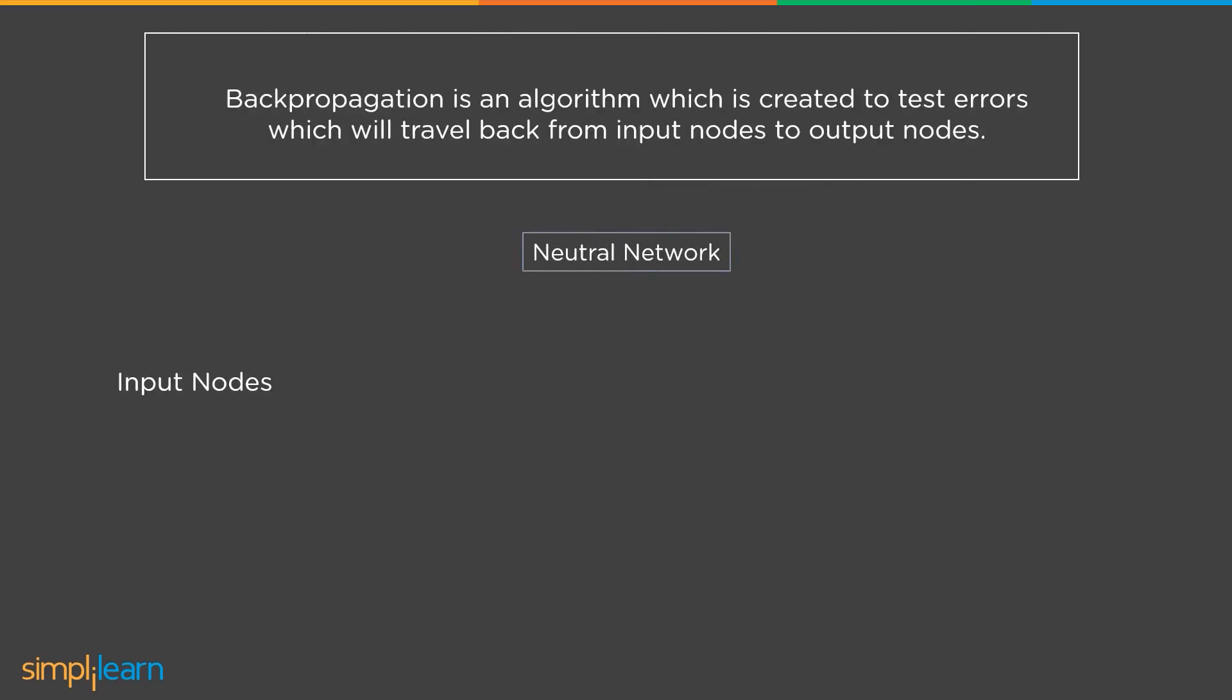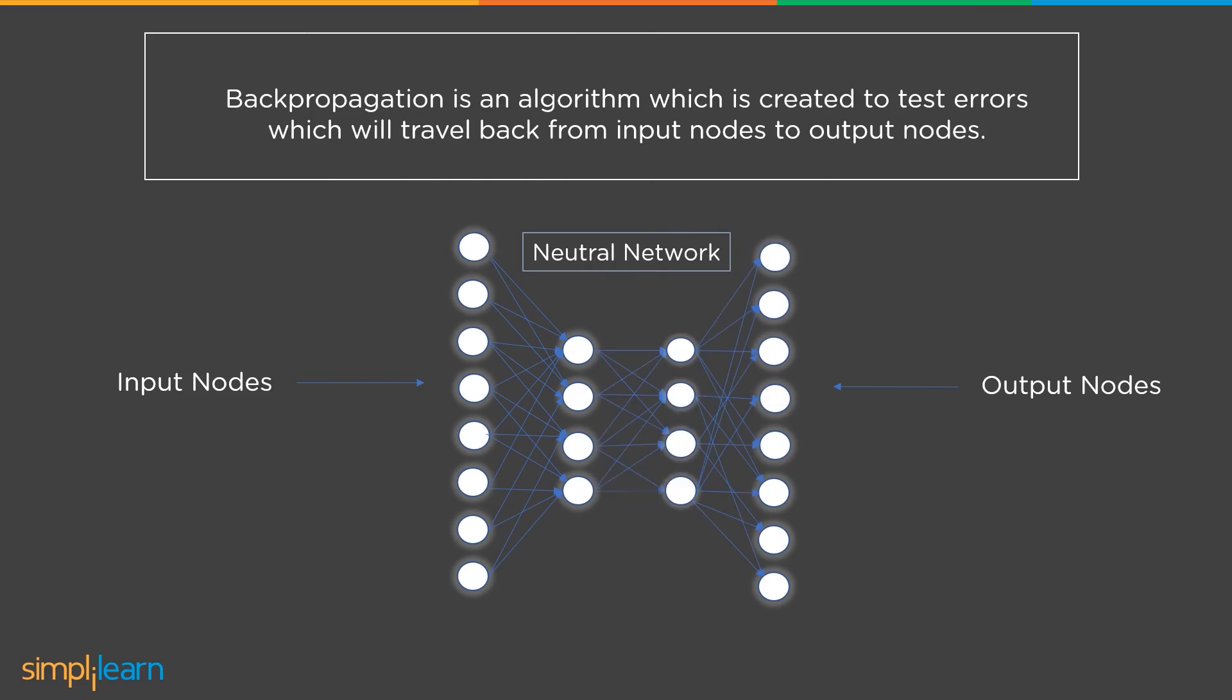Backpropagation is an algorithm which is created to test errors which will travel back from input nodes to output nodes. It is applied to improve accuracy in data mining and machine learning.